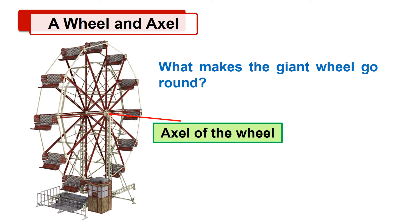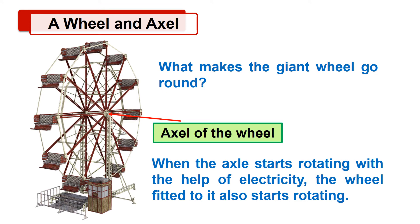Now, let's see the next topic, a wheel and axle. All of you must have enjoyed sitting on a giant wheel. What makes the giant wheel go round? The axle of the giant wheel makes it go around, which is fitted to a rod at its center. When the axle starts rotating with the help of electricity, the wheel fitted to it also starts rotating.